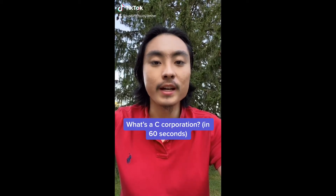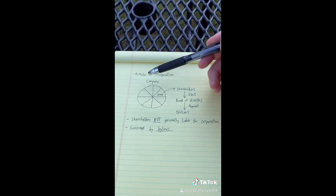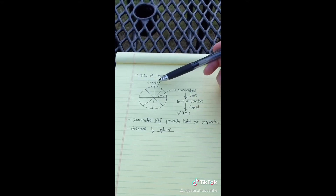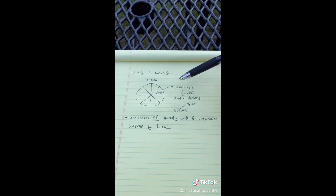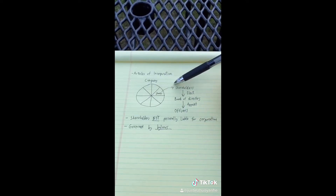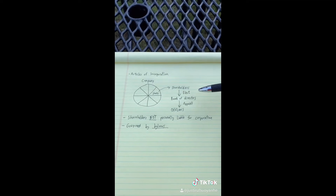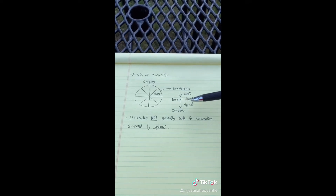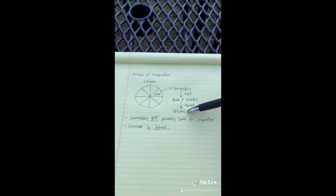What's a C corporation in 60 seconds? A C corporation is a type of business entity very popular with large companies. It is formed by filing articles of incorporation and it has a formal structure. The company is divided into shares held by shareholders, whose ownership is based on how many shares they have. Shareholders elect a board of directors responsible for overseeing the company, and the board appoints officers like CEOs and CFOs who are responsible for running the company.